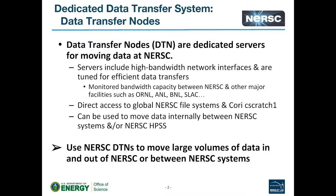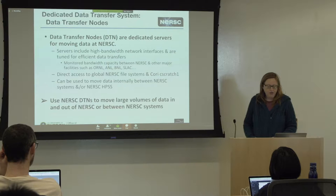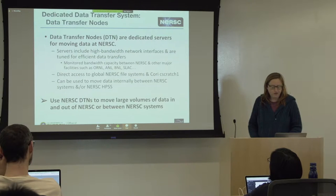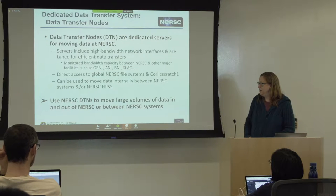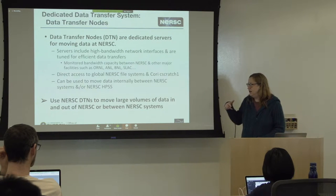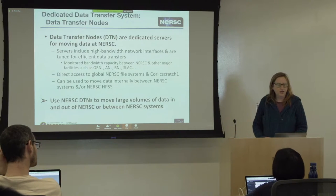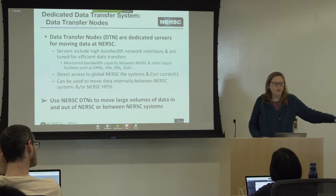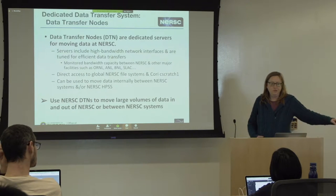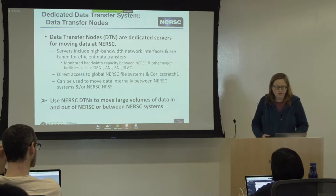On these DTNs you'll have access to every global NERSC file system — the project file system, homes, HPSS, and Cori Scratch. You can use these either to move data internally between NERSC systems and between NERSC and HPSS, but they're primarily used to move large volumes of data into and out of NERSC. If you have a large dataset at some other DOE lab or at your home institution and you need to move it in, you're most likely going to come in via these DTN nodes.